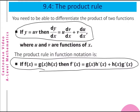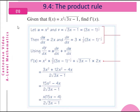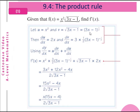Let us see some examples. Example 1: given that f(x) equals x squared multiplied by square root of (3x minus 1). So x squared is a function of x, and square root of (3x minus 1) is another function of x. To find f'(x), let u equal x squared, and v equal square root of (3x minus 1), equal to (3x minus 1) to the power of half.